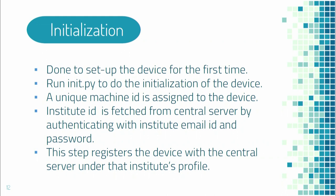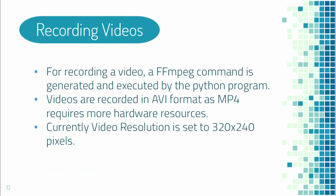Our project mainly consists of seven independent modules. The first module is used for initialization. When the device is set up for the first time, initialization is necessary. It can be done by running the Python file init.py, which assigns a unique machine ID to the device. The institute ID is fetched from the central server by authenticating the email and password, setting up the device under the institution profile.